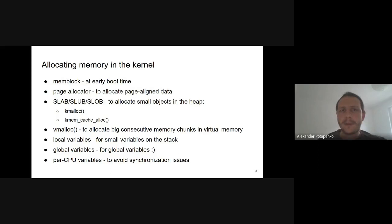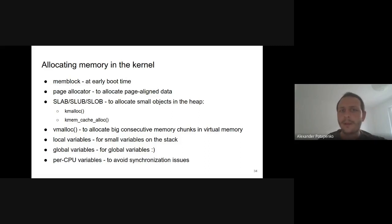There are many ways to allocate memory in the kernel, and our tool needs to track them all. Memblock is used at early boot time before other allocators are available. Once the kernel is fully set up, it can use a page allocator and one of the heap implementations on top of it — Slab, Slub, or Slob. There is also vmalloc to allocate big contiguous chunks of virtual memory. Like in user space, there are local and global variables, and the kernel also has special per-CPU variables.